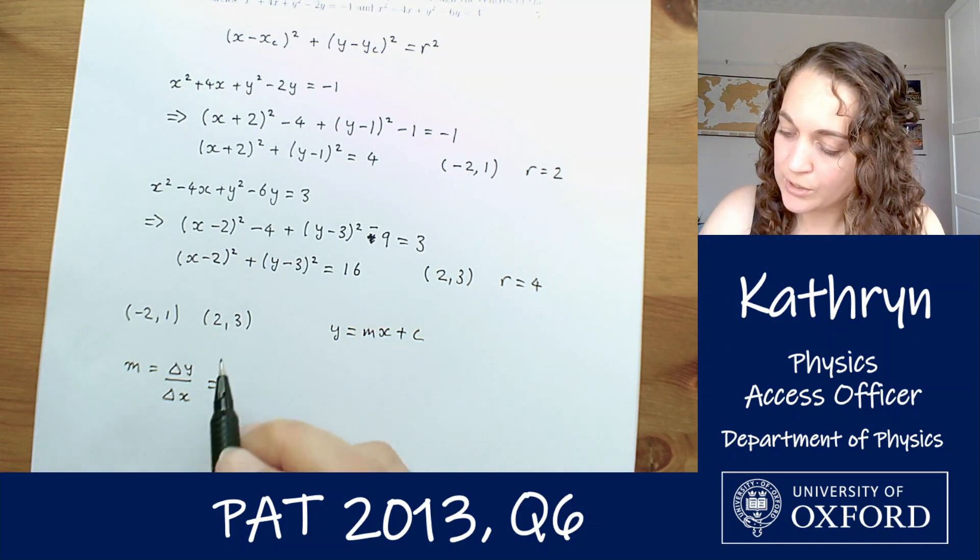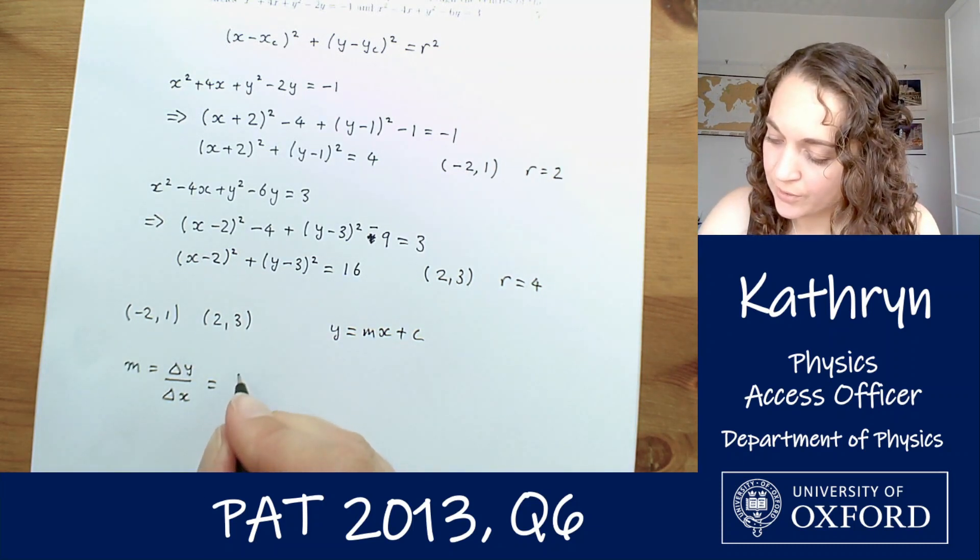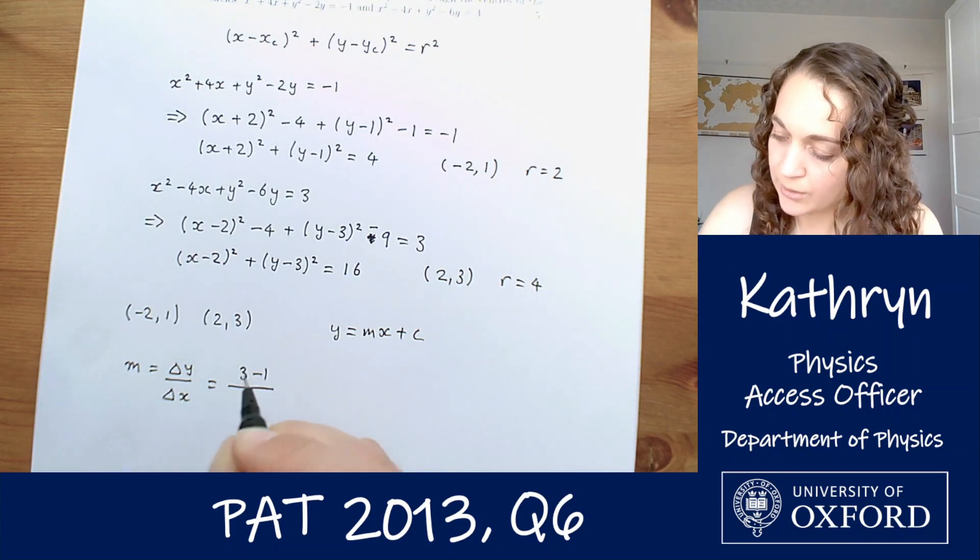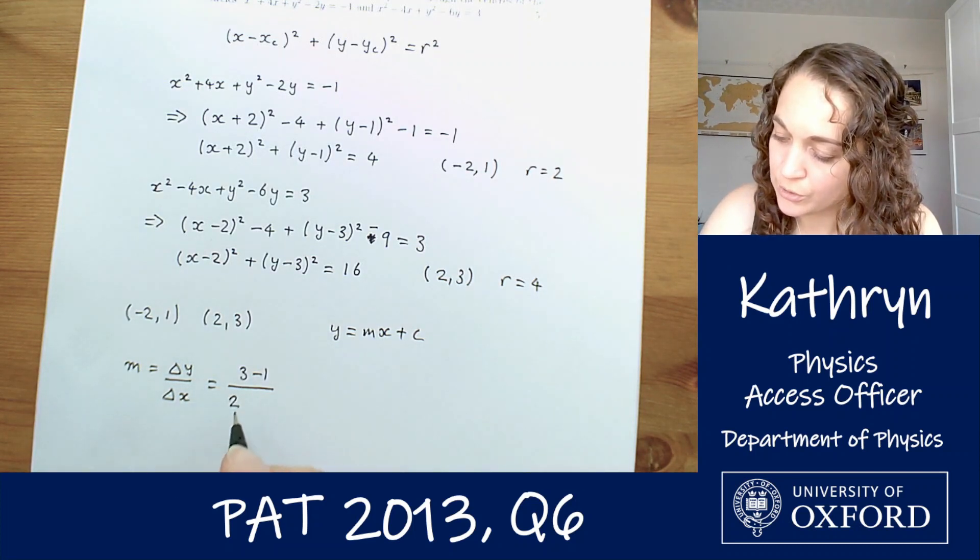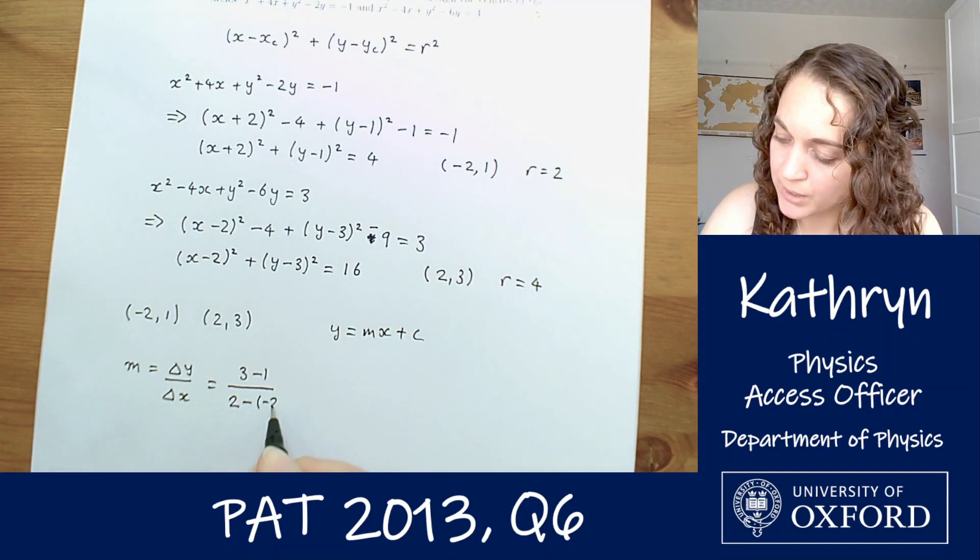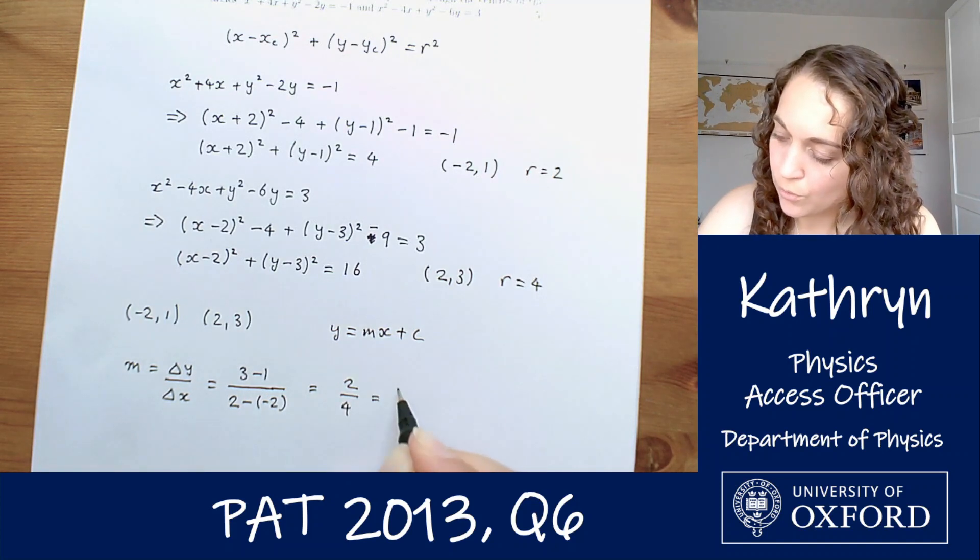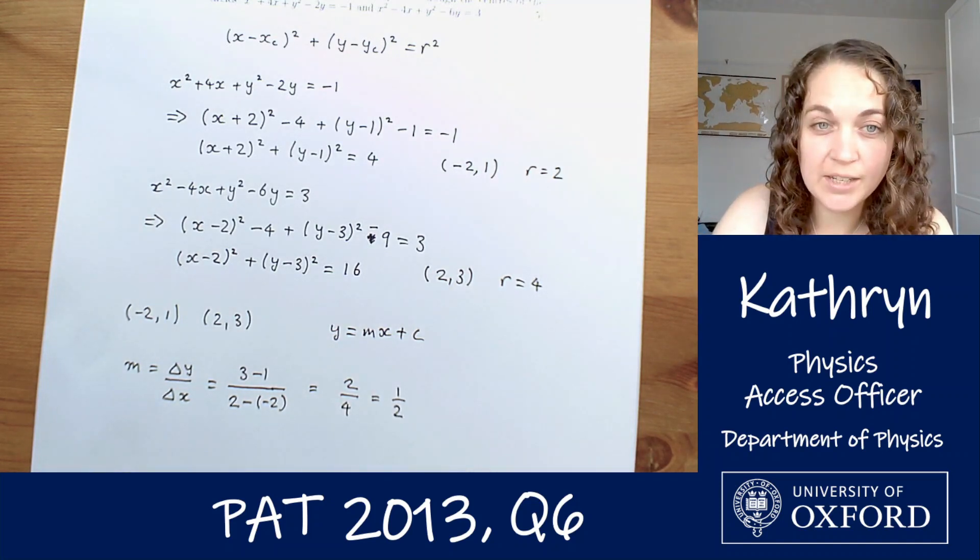So we're going to do this one take away that one. So that's going to give us on the top 3 minus 1, and on the bottom it's going to give us 2 minus minus 2. So that is 2 over 4 or a half. So we've got a gradient of a half.